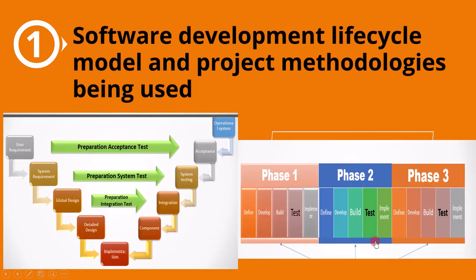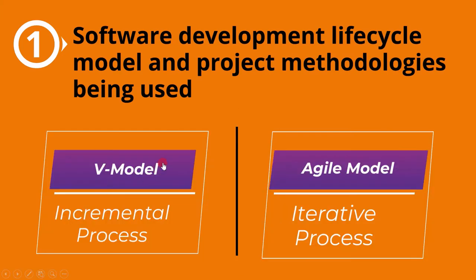We can see a picture to understand these two processes. In the V-model, the complete project is implemented incrementally, and once the development phase is done, the corresponding testing activity is started. Whereas in the Agile method, a few features are implemented in a week, testing is done for that feature, and this repeats throughout the project development. Therefore, the same test process is implemented differently based on the model used.